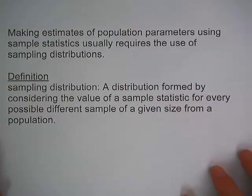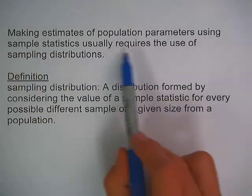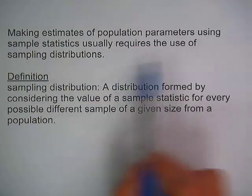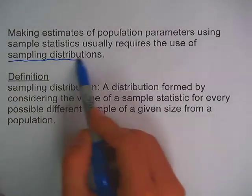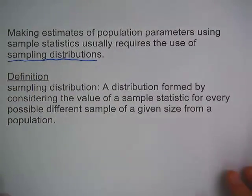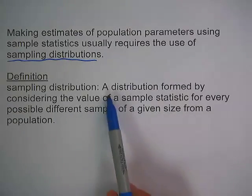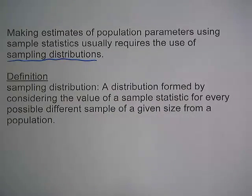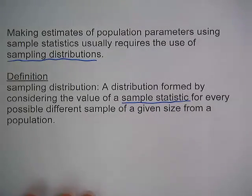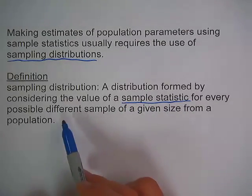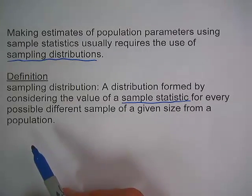Making estimates of population parameters using sample statistics usually requires the use of sampling distributions. A sampling distribution is defined as a distribution formed by considering the value of the sample statistic for every possible different sample of a given size from a population.